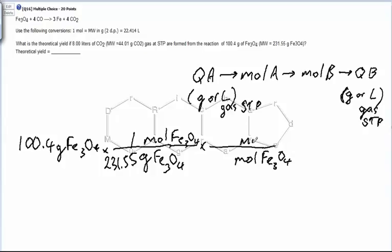We'll have moles of CO2 on top because that's what we need next. The relationship between these: one mole of Fe3O4 is equal to four moles of CO2. We get that from the reaction equation.